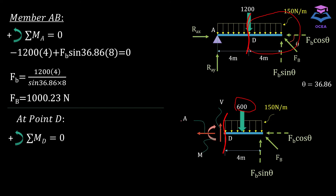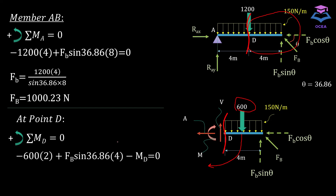Applying the first equation of equilibrium, summing all moments at point D equals zero, taking anti-clockwise moments as positive. The 600 N resultant acts at the centroid, 2 meters from point D, producing a clockwise moment: minus 600 times 2. Plus FB sin(36.86°) times 4 (anti-clockwise, positive). Plus MD (clockwise, hence negative) equals zero. Solving gives MD equal to 1200 Newton-meters.